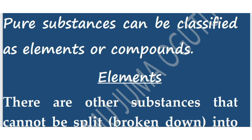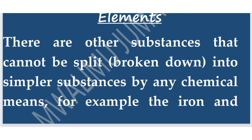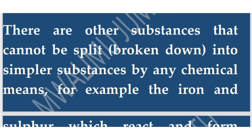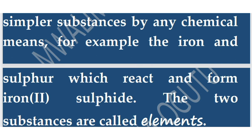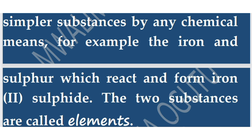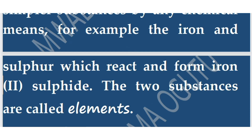Let's begin by looking at elements. There are substances that cannot be split or broken down into simpler substances by any chemical means. For example, we have iron and sulfur, which react and form iron(II) sulfide. The two substances — iron and sulfur — are called elements.